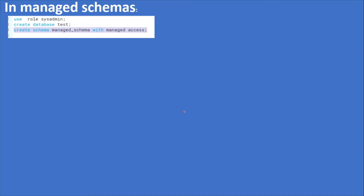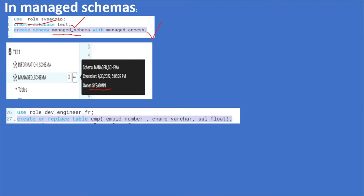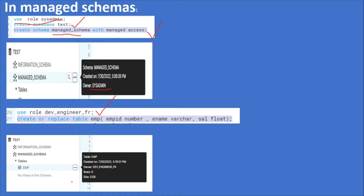That is about regular schemas. Now let's see the same in managed schema. To create a managed schema, I am going to use another database called test, use role sysadmin, and create the schema with the WITH MANAGED ACCESS clause — that is the keyword we have to use to create managed schemas in Snowflake. Schema owner is sysadmin. Now I am going to create a table in this schema using the role dev_engineer_fr. Table is created and the table owner is dev_engineer.